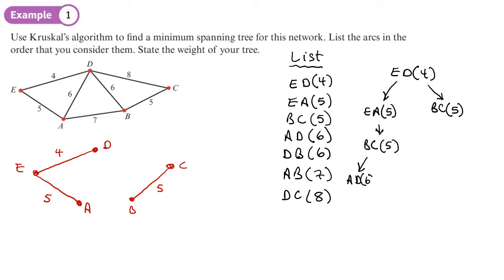AD would form a cycle, so we end there. Or I could add BD or DB, which is 6. So that's the route I'm going to take. This bit, whenever it gets a cycle, we stop. So let's add BD.